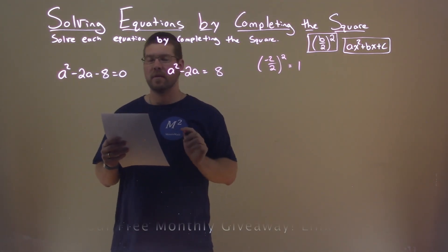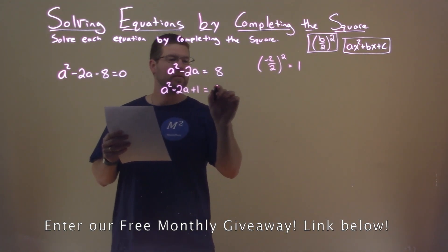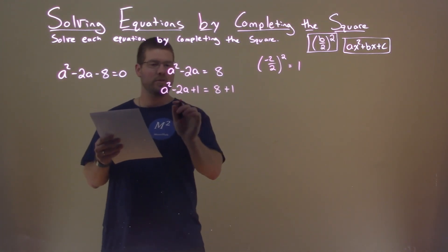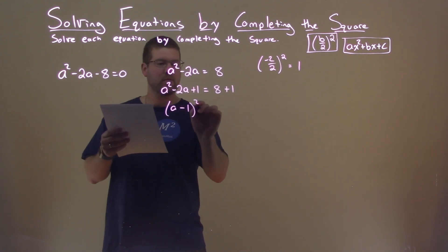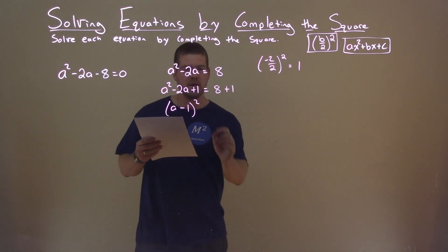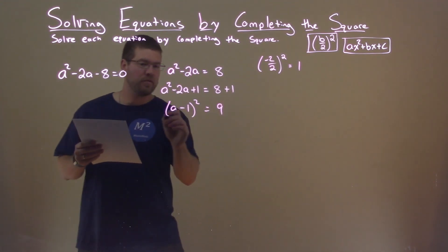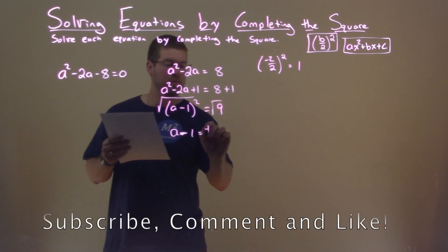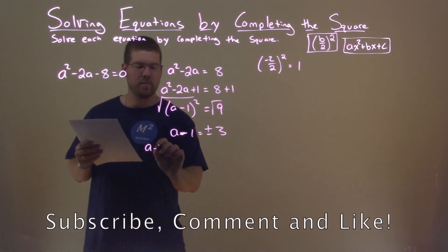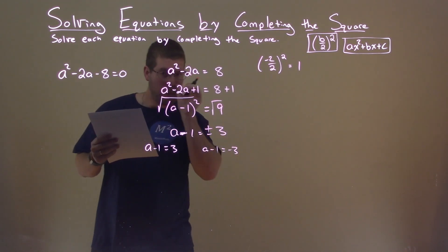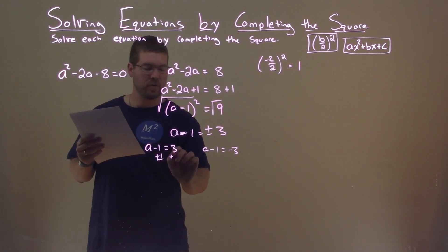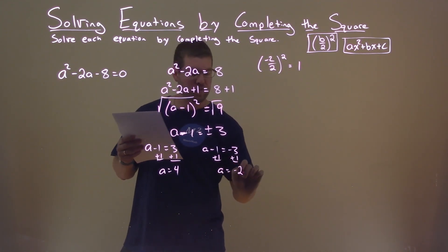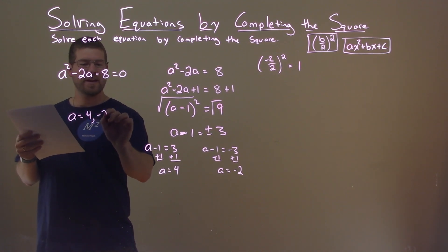So now we're going to add 1 to both sides: A squared minus 2A plus 1 equals 8 plus 1. We can turn this into a perfect square: A minus 1 squared is the same as A squared minus 2A plus 1, and 8 plus 1 is 9. Taking the square root of both sides, we have A minus 1 equals plus or minus 3. Breaking this into two equations: A minus 1 equals positive 3 gives A equals 4, and A minus 1 equals negative 3 gives A equals negative 2. My two solutions are A equals 4 and negative 2.